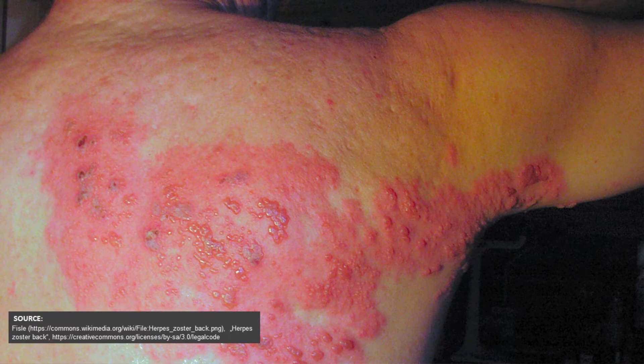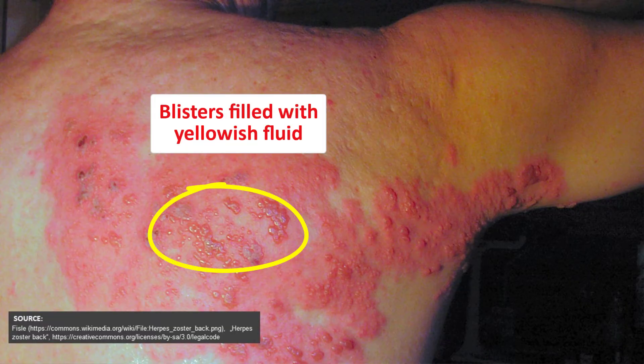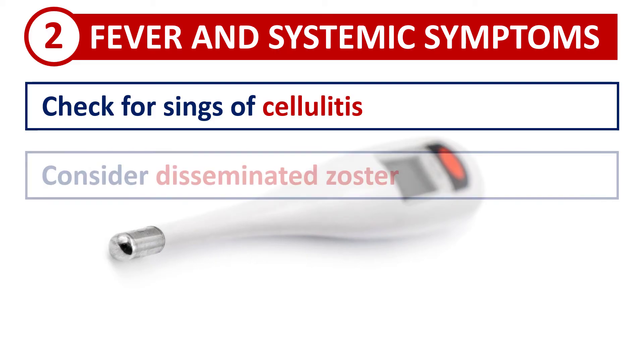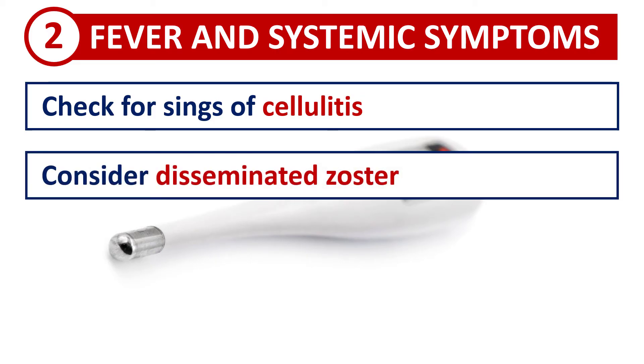It's not always easy to discern whether there is a bacterial superinfection, because the skin is red to begin with, and the blisters can often be yellowish and look like pus. Nevertheless, take a close look, and if you suspect cellulitis, start antibiotics. And generally, if your patient with shingles has fever and looks unwell, look for signs of systemic illness — meaning generalized zoster.